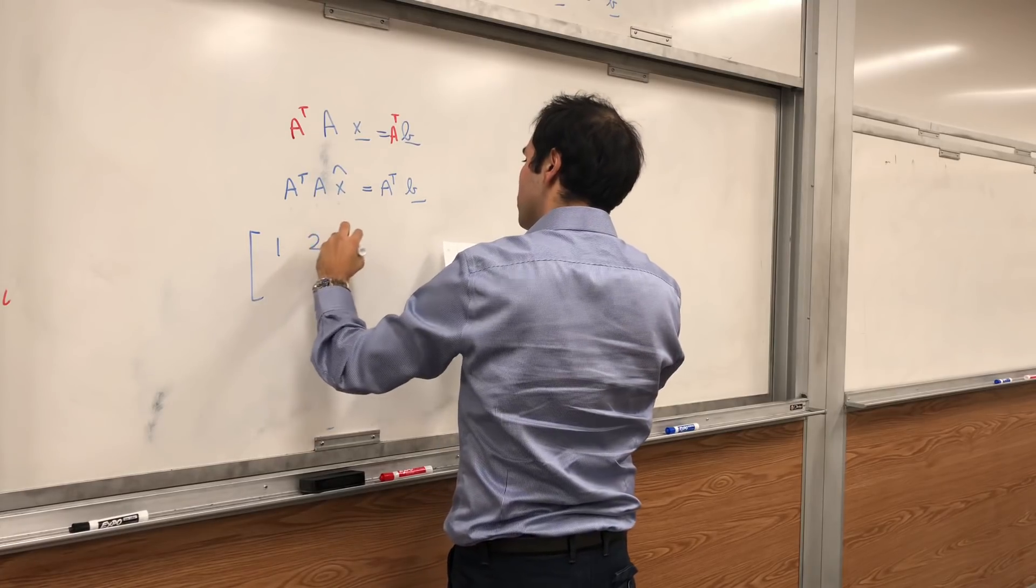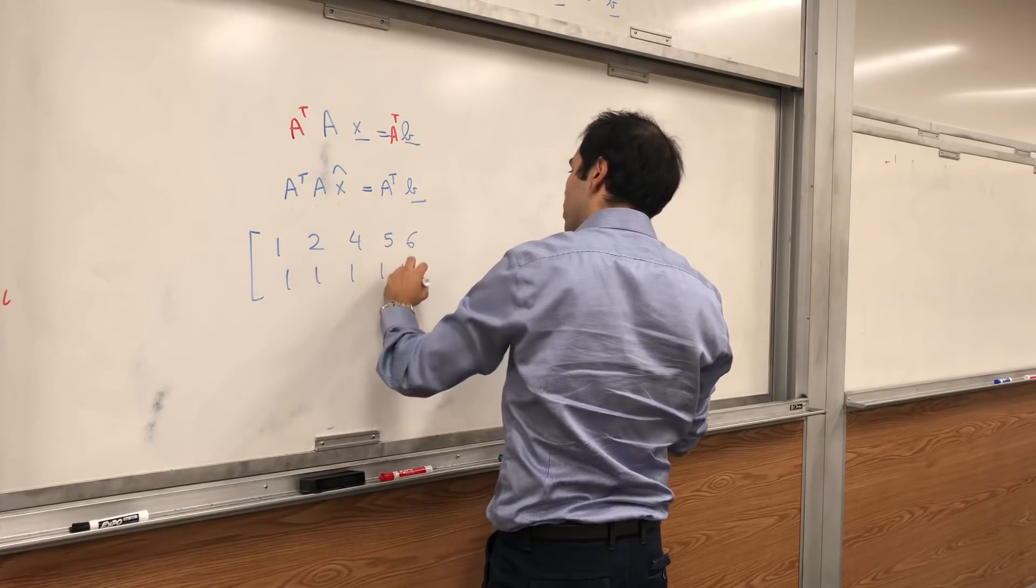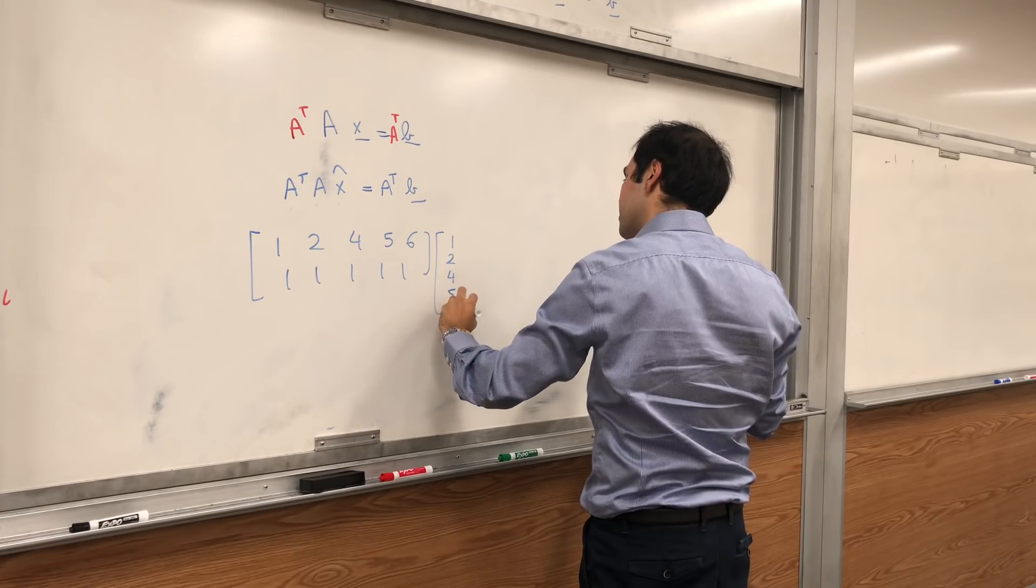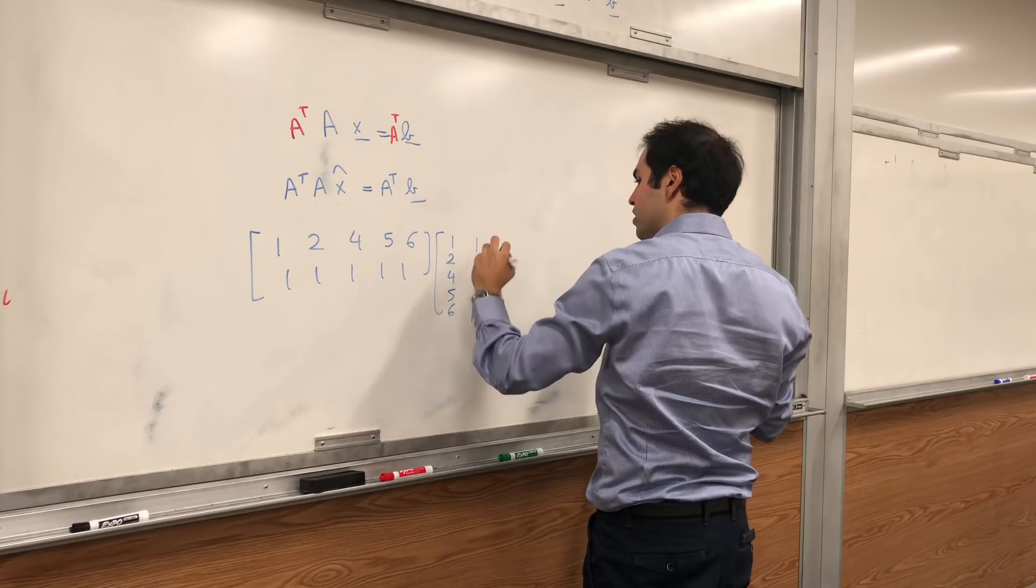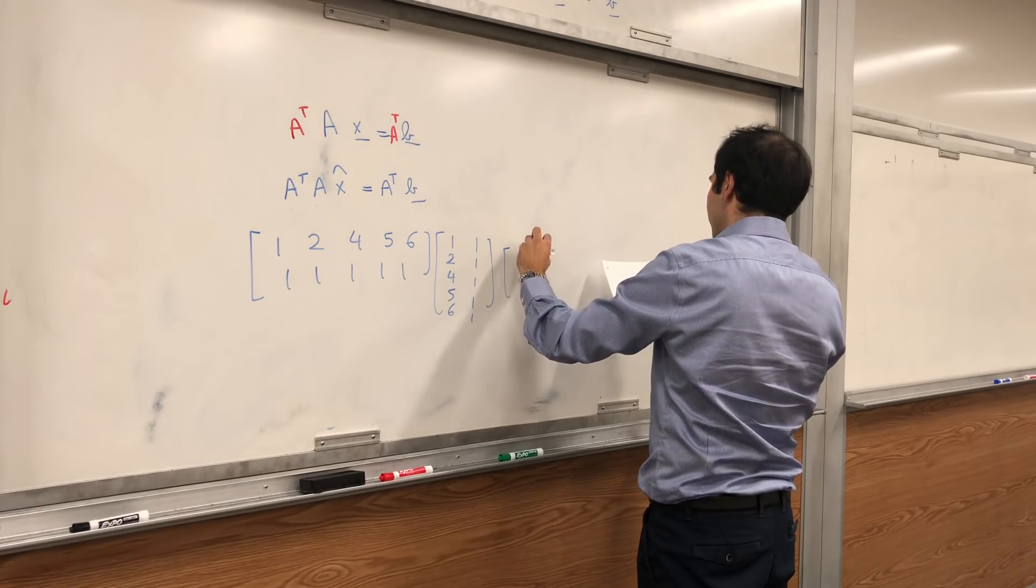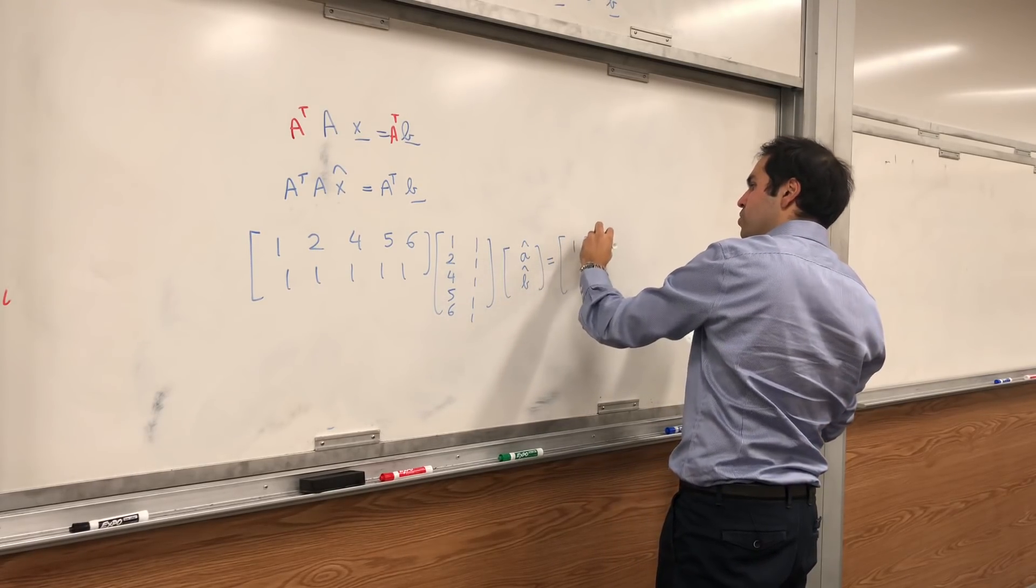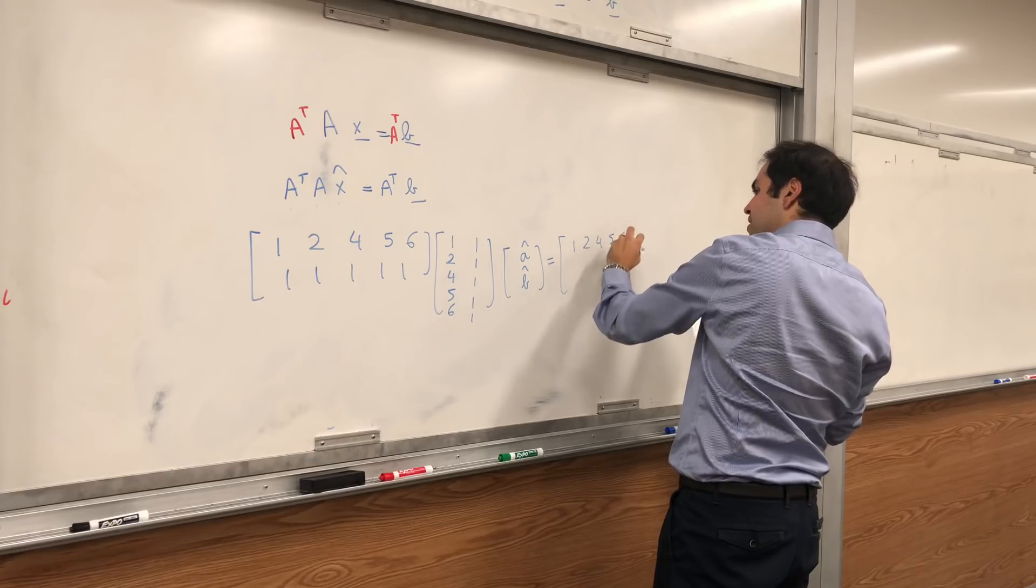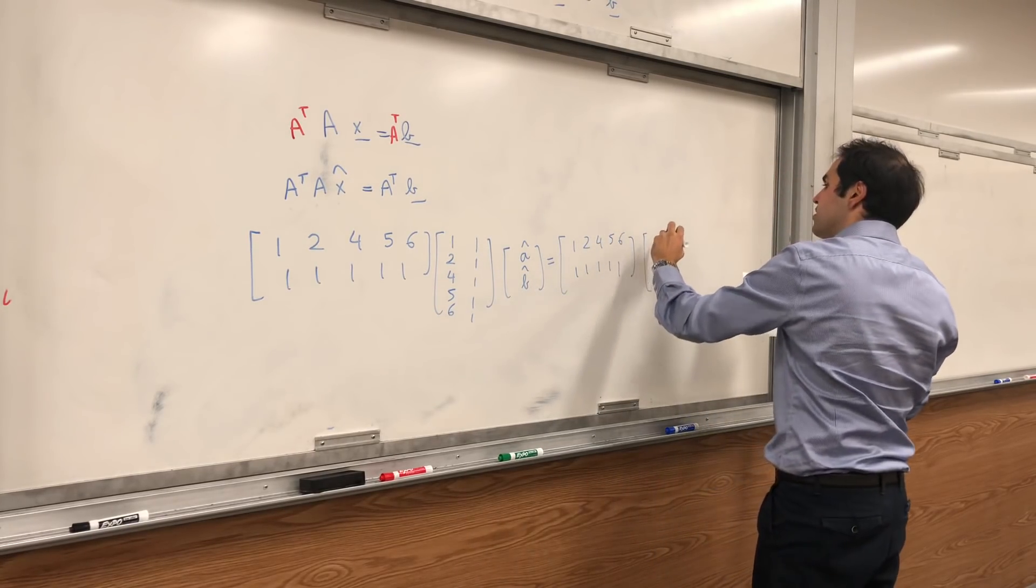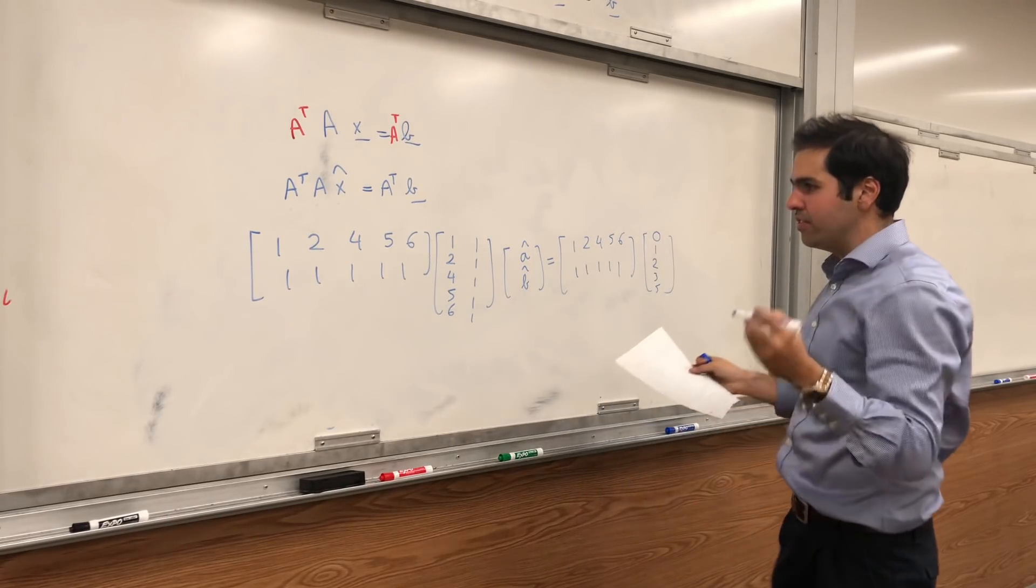So A transpose A, our least squares equation, equals A transpose B, and let's do that. A transpose is [1,2,4,5,6; 1,1,1,1,1] times [1,2,4,5,6; 1,1,1,1,1]. And then X hat, let's call this A hat and B hat, and B was [0,1,2,3,5].